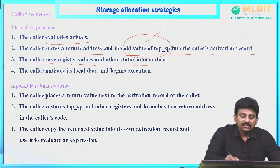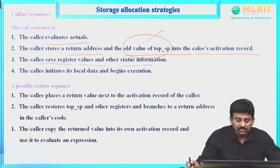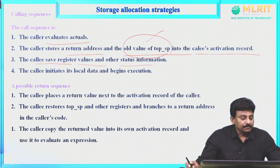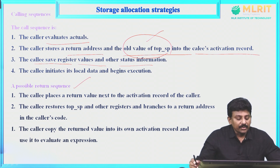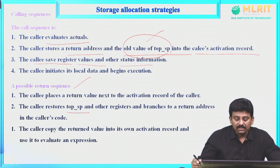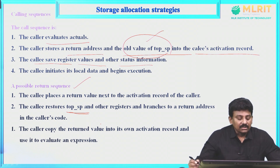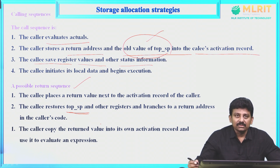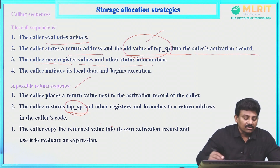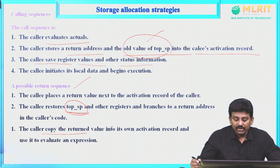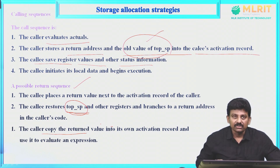The callee saves register values and other status information, then initiates its local variables and begins execution. After saving register values, the callee starts executing its definition. For the return sequence: the callee places the return value next to the activation record of the caller, then restores the top SP and other registers and branches to the return address in the caller's code. The caller copies the return value into its own activation record and uses it to evaluate the expression.